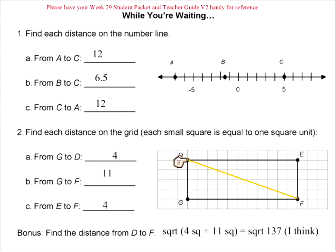This actually turned out to be square root of 137, and we can just leave that in the radical form. Any questions before we move on?